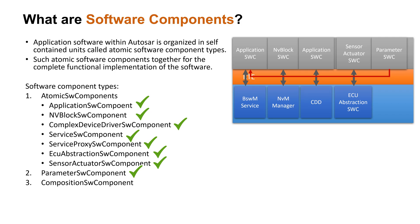This component cannot have a receiver port and has only a provider port to provide calibration alone. For example, if we need to switch on the headlight automatically when it's dark, we could use this component to provide a calibration parameter with a light intensity cutoff value. This calibration can be used by other application components to determine when to activate the light based on the light intensity. The cutoff calibration can be fine-tuned during vehicle production, and such calibrations can be clustered into a parameter software component.